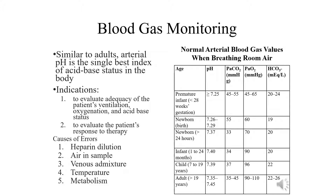Different methods for obtaining arterial blood gases include an indwelling umbilical artery catheter, an indwelling peripheral artery catheter, or an arterial puncture. Usually in neonates, we want to avoid doing a puncture, because as they cry and get upset, that can change their blood gas values. So usually a catheter of some sort, either in the umbilical or peripheral, is the ideal place to draw a blood gas.